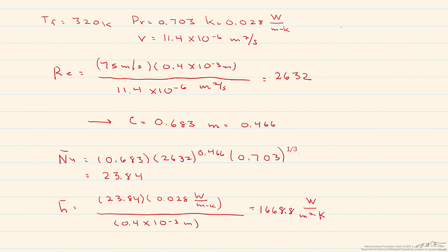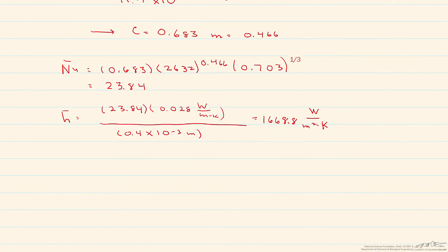that we can find our average convective heat transfer coefficient. So we get an H of 1668.8 watts per meter squared Kelvin. So now let's put that into our equation for the surface temperature. So our surface temperature is equal to our Q' divided by H times π times D added to our bulk temperature. And that's equal to 36.9 degrees C.